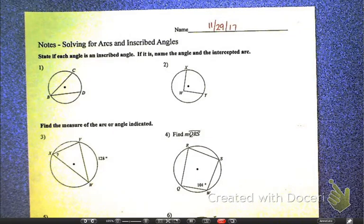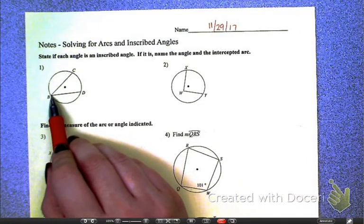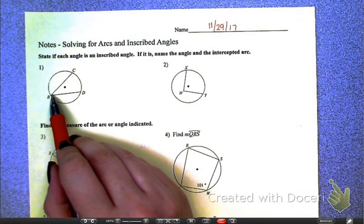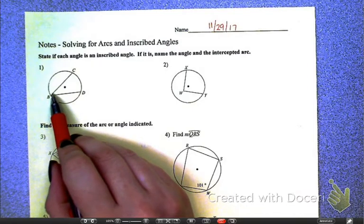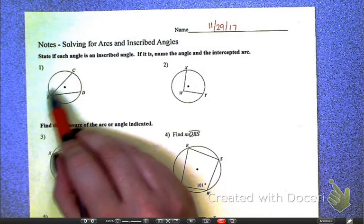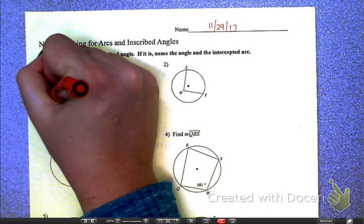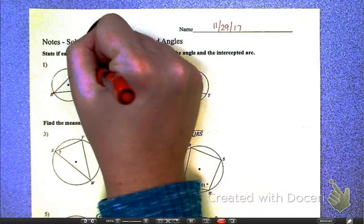So let's start with an inscribed angle. Who can remind us what an inscribed angle is? Adrian? Okay, so Adrian just gave us a full definition. What you really need to know is that the vertex of the angle is on the circle. So in this case, is this angle an inscribed angle? Yeah. Yeah, the vertex is on the circle. So yes, this is an inscribed angle.